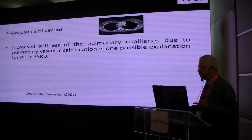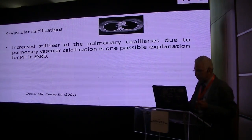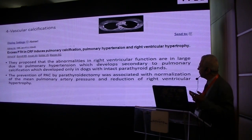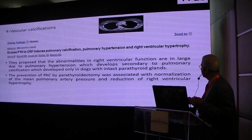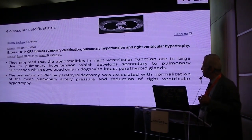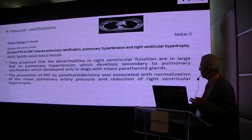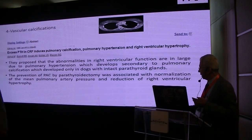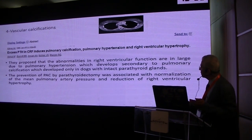Vascular calcification is one of the mechanisms proposed for induction of pulmonary hypertension, though there is controversy about this. One study published in 1995 showed that parathyroid hormone excess in chronic renal failure can induce pulmonary calcification, pulmonary hypertension, and right ventricular hypertrophy. They proposed that right ventricular dysfunction developed secondary to pulmonary calcification, observed only in experimental dog models with intact parathyroid glands. According to this observation, pulmonary arterial calcification can be ameliorated by parathyroidectomy — though it is just a single study.